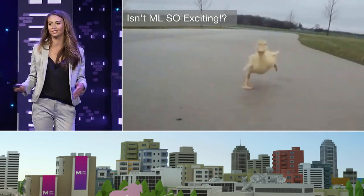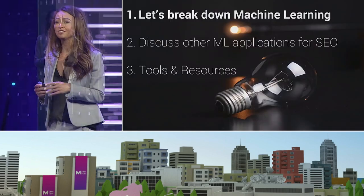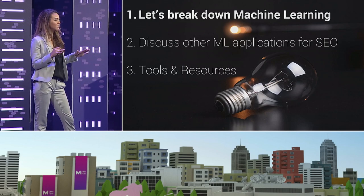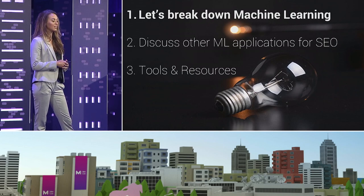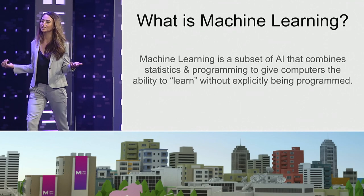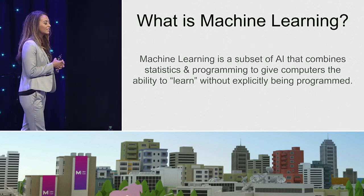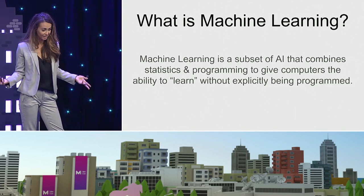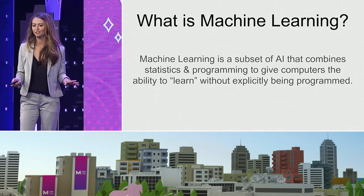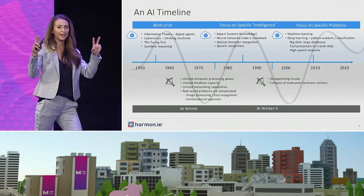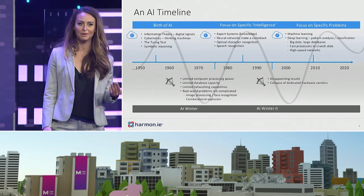We're going to break down what machine learning is. Hopefully by the end you'll be able to talk about it intelligently, have the foundations, feel comfortable executing some models yourself, and understand applications for SEO plus tools and resources. Machine learning is basically a subset of AI that combines statistics and programming to give computers the ability to learn or train without explicitly being programmed. And 99% of the time you hear the word AI, it's just machine learning.